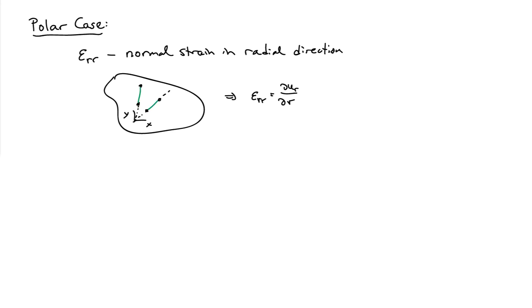That was the Cartesian case. We can also work in polar coordinates and define polar strains. For example, epsilon_rr is the normal strain in the radial direction. Through a construction analogous to before — considering a line segment of material in the radial direction, comparing before and after deformation, and computing the relative change in length — we find that the radial strain equals the derivative of the radial motion u_r with respect to the radial coordinate r: epsilon_rr = ∂u_r/∂r.